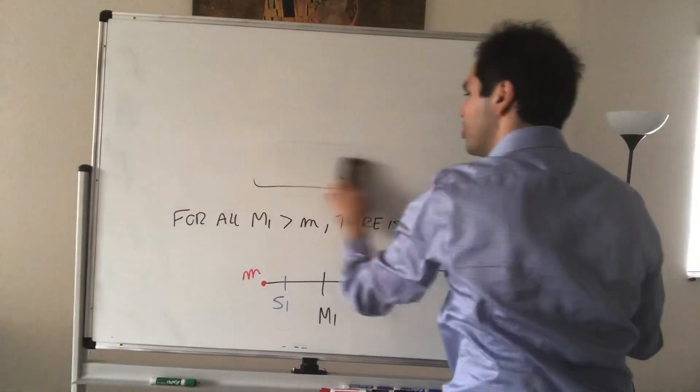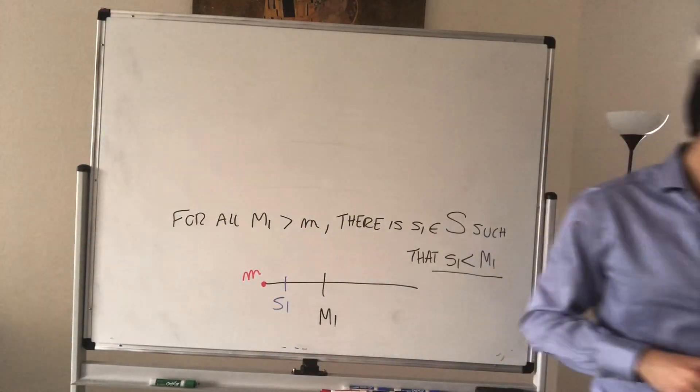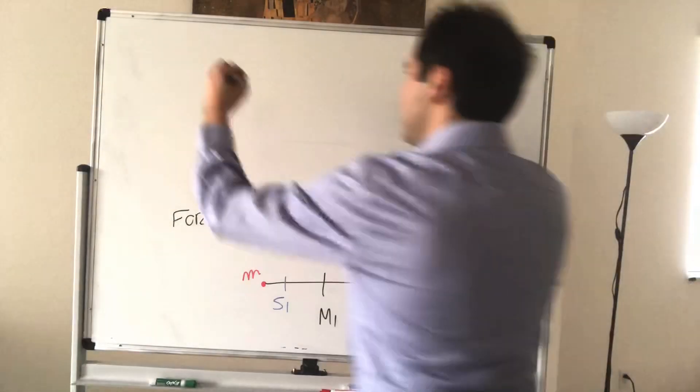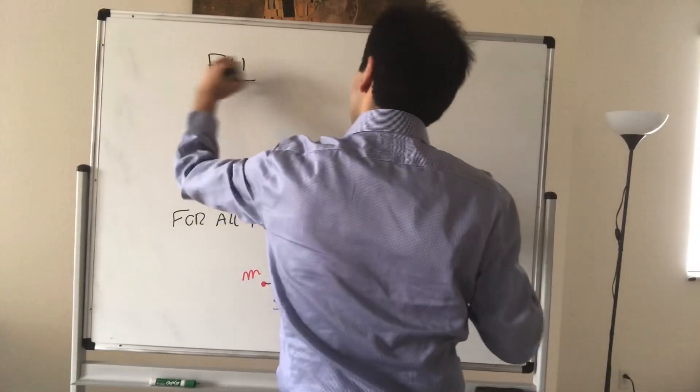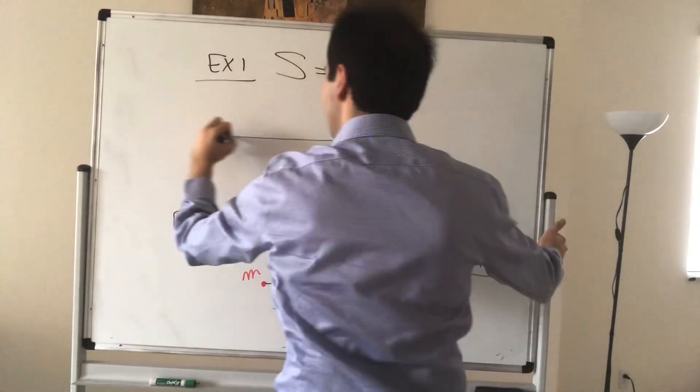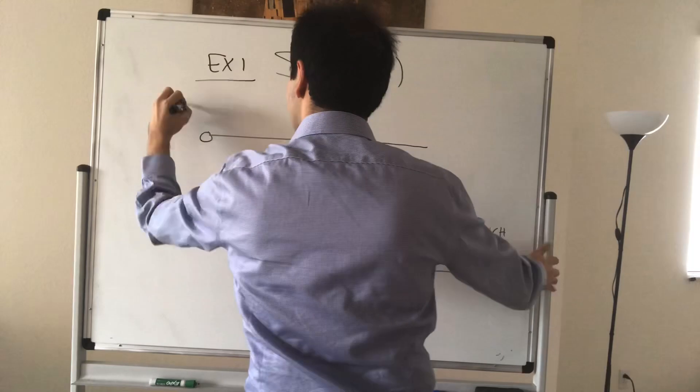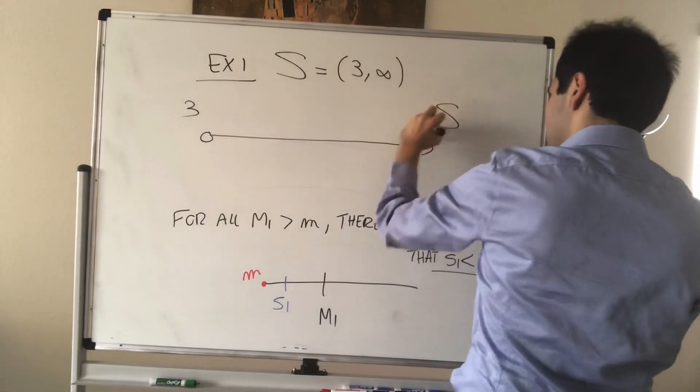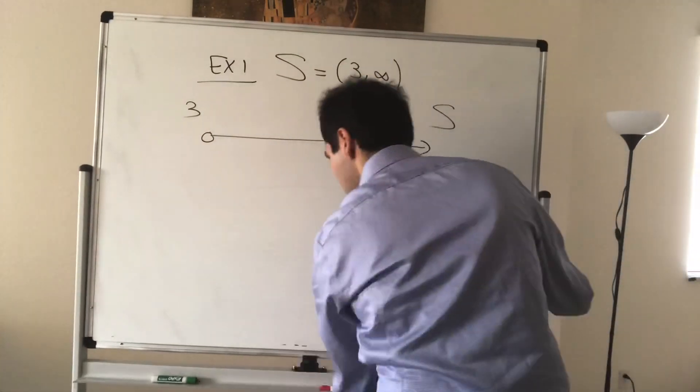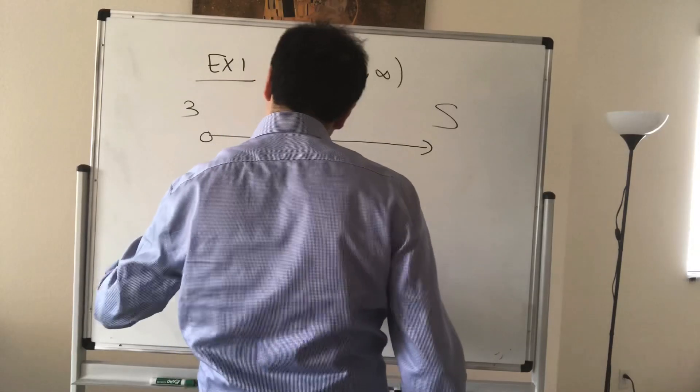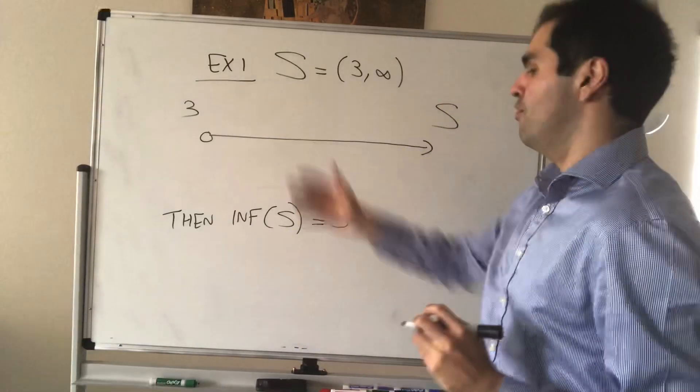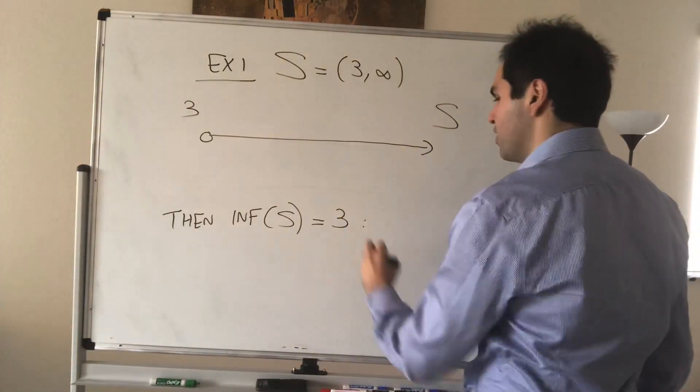And, let's just do a couple of examples, so just two examples to illustrate. Consider, again, the interval, in this case, 3 comma infinity. S is 3 comma infinity, what does it mean for the inf to be 3? That is 3, that is S, then the inf of S is 3. And why is that? Well, first of all, 3 is a lower bound.